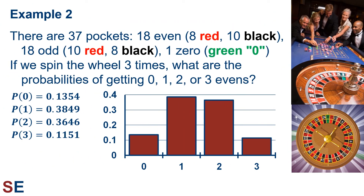Looking at the binomial probability distribution for this scenario, we can see that it is not quite symmetric because the probability of success is not 0.5. The most likely result is seeing even once, but seeing even twice is almost as likely. The sum of all these probabilities equals 1 because there are no other possible results in 3 trials. As a quick mental calculation showing how the casino makes money: if you place a bet on even and keep it there for all 3 spins, you'd get 2 times 2 times 2 equals 8 times what you started with. But the probability of that happening is only 0.1151, which is less than 1 in 8 (0.125). That slightly-less-than-1-in-8 chance is where the casino makes its money.